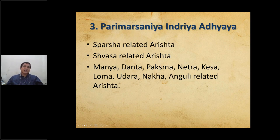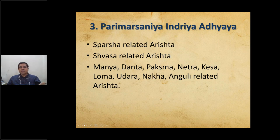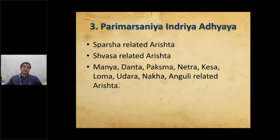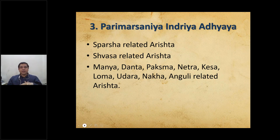The third chapter is Parimarshaniya Indriyam Adhyaya. In this chapter, Sparsha (touch) related and Shvasa related Arishtas are explained. Especially Manya, Danta, Pakshma (eyelashes), Netra (eyes), Kesha (hair), Loma (skin hair), Udara (abdomen), Nakha (nails), and Anguli (fingers) are examined. These are all Pratyaksha Pramana and are very helpful clinically to establish the prognosis of a particular patient.